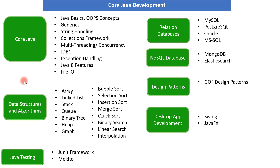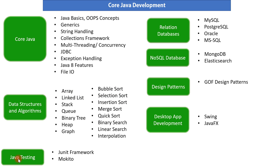Next, move on to data structures and algorithms, which are the building blocks for any programming language. You should have a good understanding of data structures like arrays, linked lists, stacks, queues, binary heaps, and graphs, and algorithms like sorting and searching algorithms. While writing logic you will make use of these data structures and algorithms.